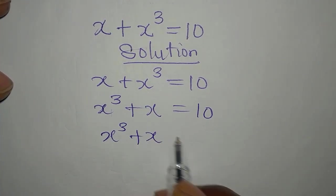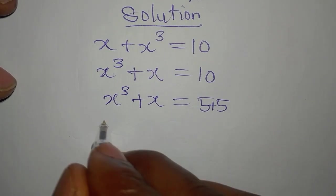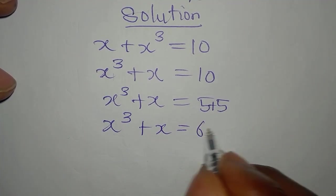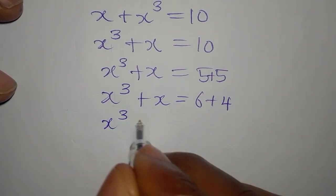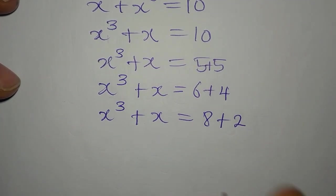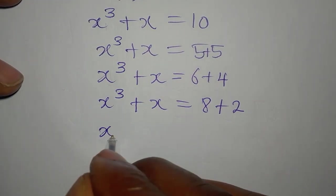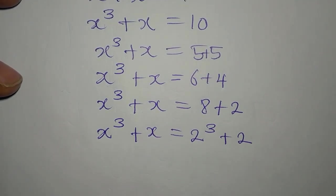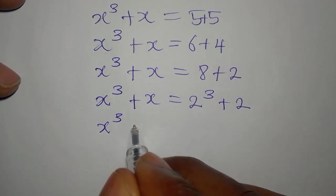10 can be 5 plus 5, but that's not what we need. x³ plus x can be 6 plus 4, but that's not what we need either. x³ plus x can be 8 plus 2, and that is what we need, because 8 can be written as 2 to the power of 3. So x³ plus x equals 2³ plus 2.